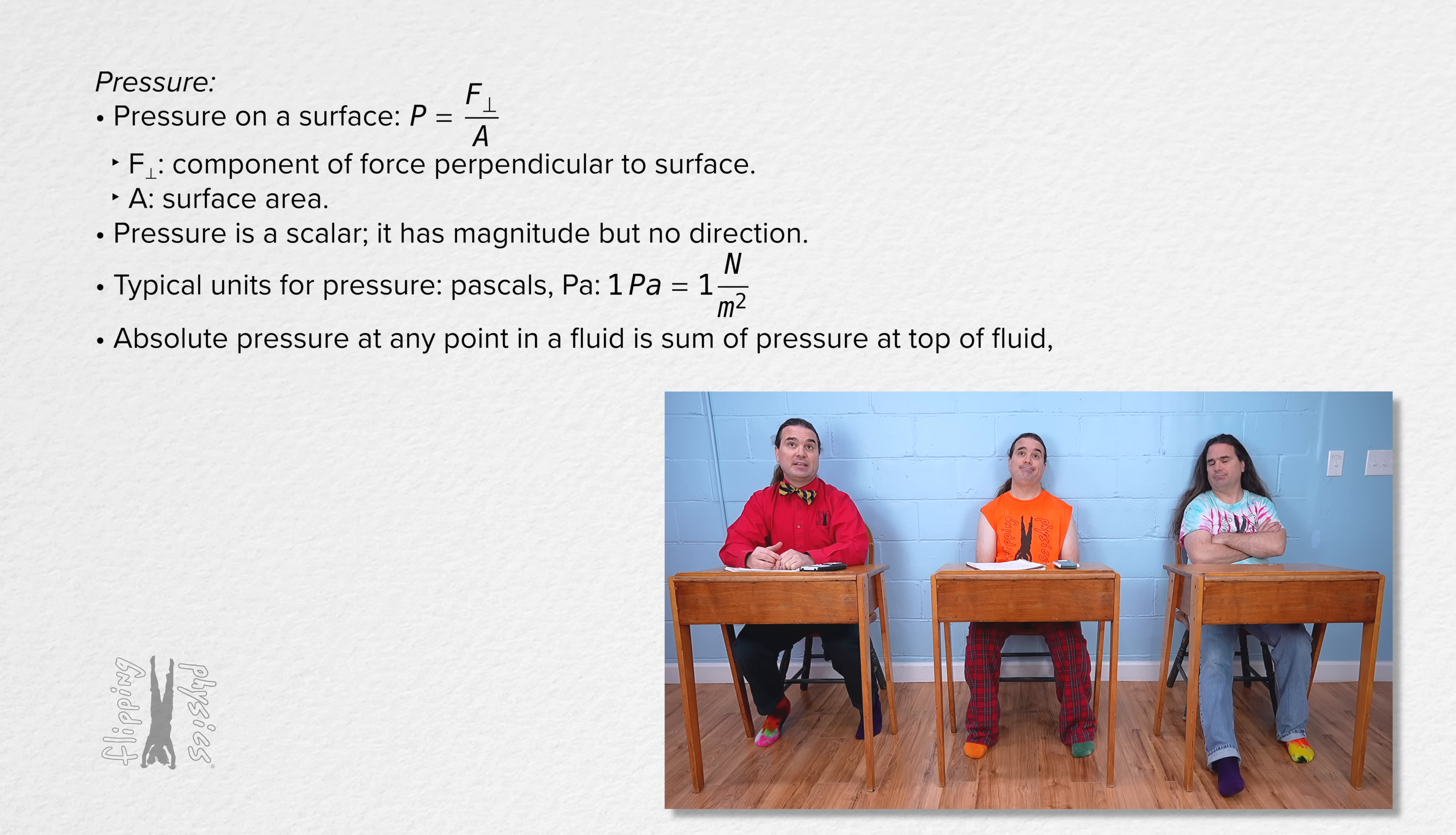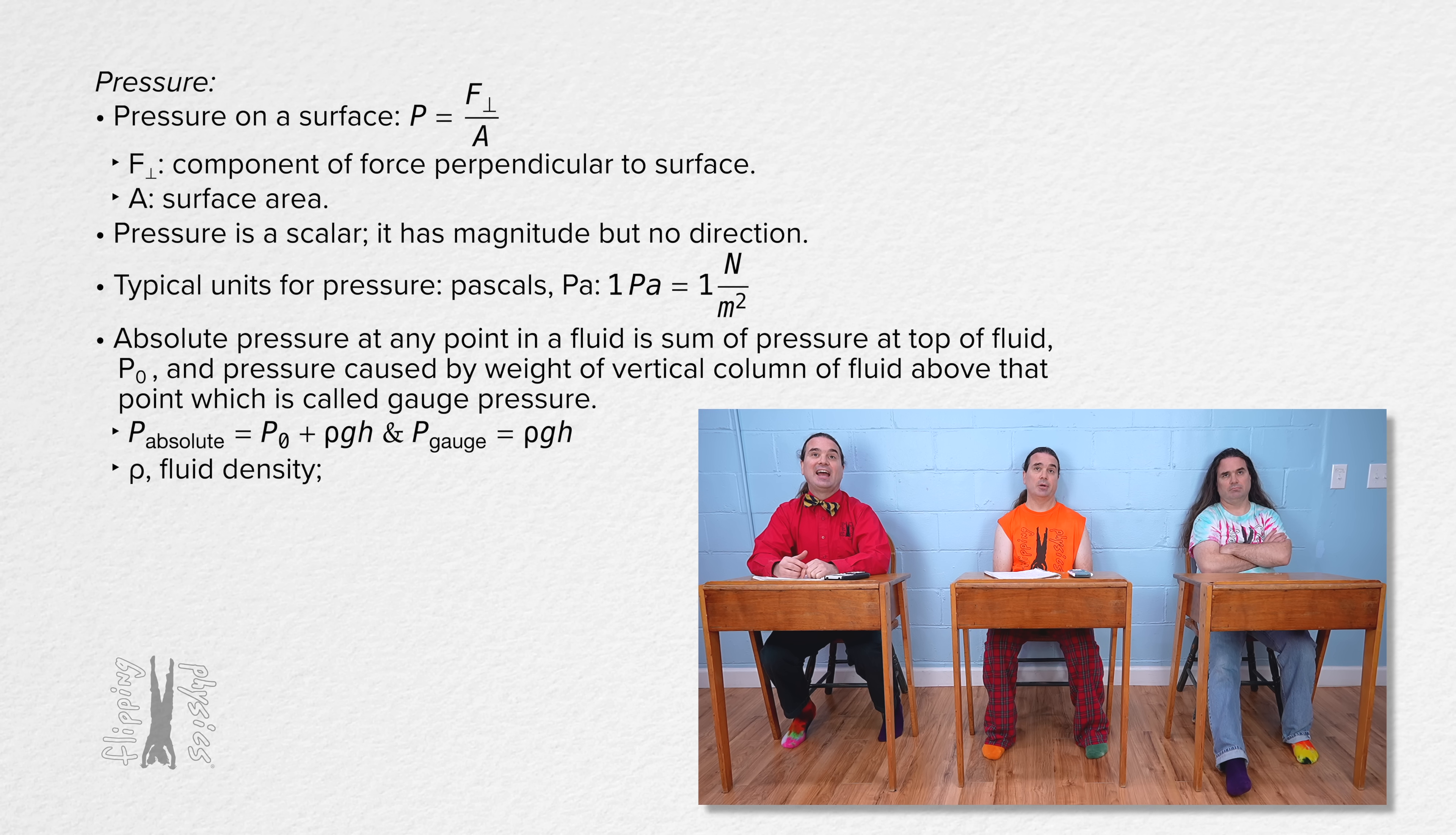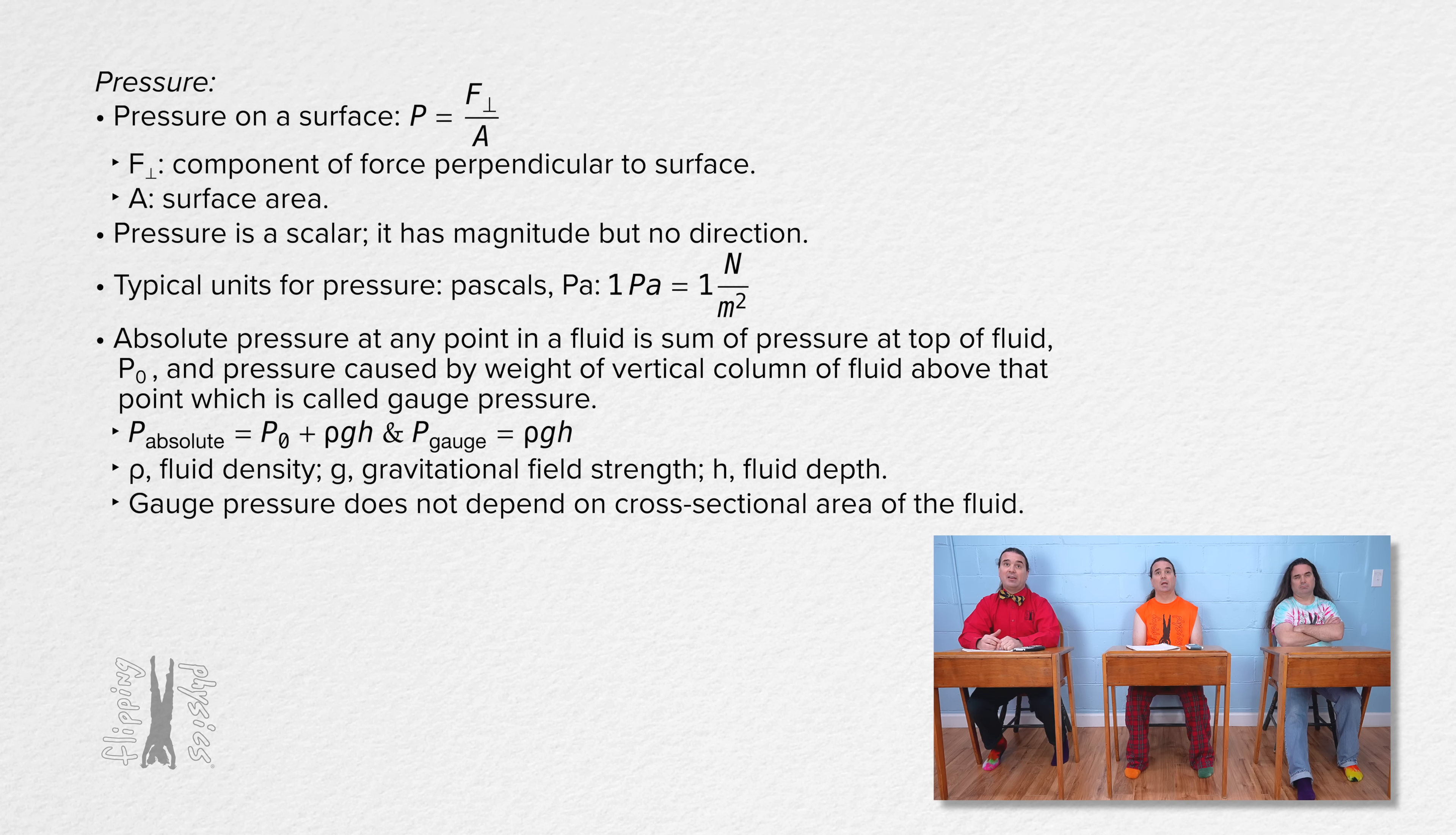The absolute pressure at a point in a fluid is the sum of the pressure at the top of the fluid, P₀, and the pressure caused by the weight of the vertical column of fluid above that point, which is called gauge pressure. Absolute pressure equals P₀ plus ρgh, where ρgh is the gauge pressure, ρ is the density of the fluid, g is the gravitational field strength, and h is the depth of the fluid. Remember, gauge pressure does not depend on the cross-sectional area of the fluid causing the gauge pressure.